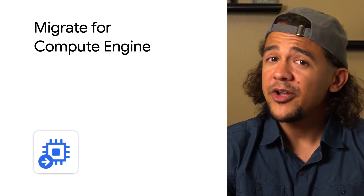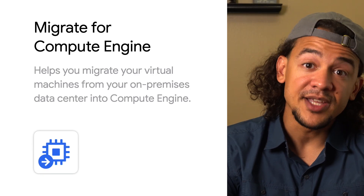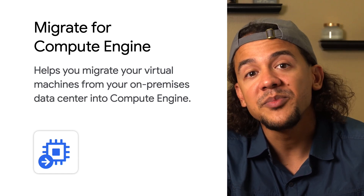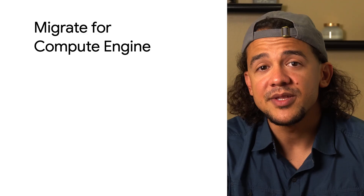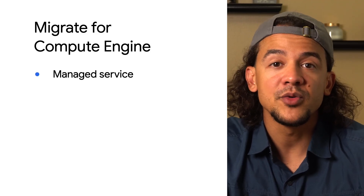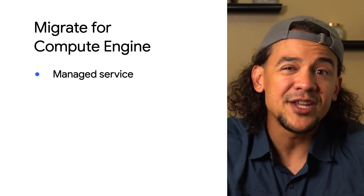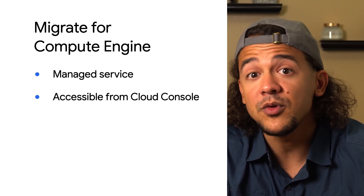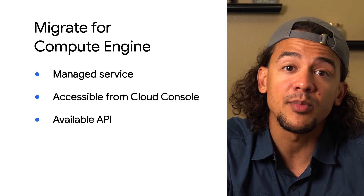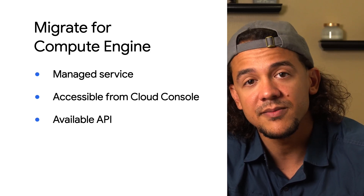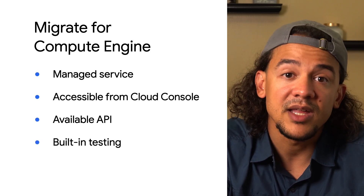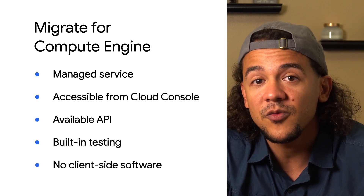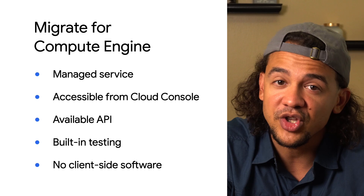Like the name suggests, Migrate for Compute Engine lets you migrate your virtual machines from your on-premises data center onto Google Cloud Compute Engine. It's a managed service, so all of its functionality is baked right into Google Cloud. That means you can manage your migration from start to finish from the Cloud console, or you can use a Cloud API for programmatically migrating workloads.